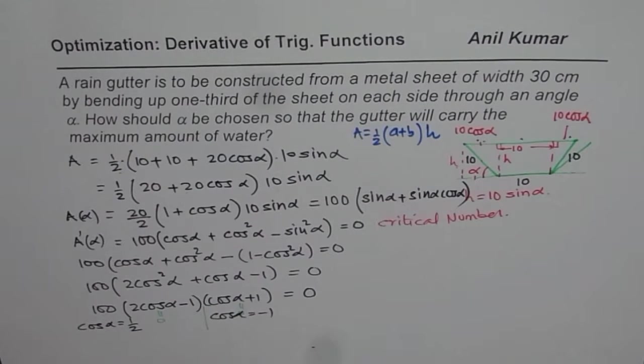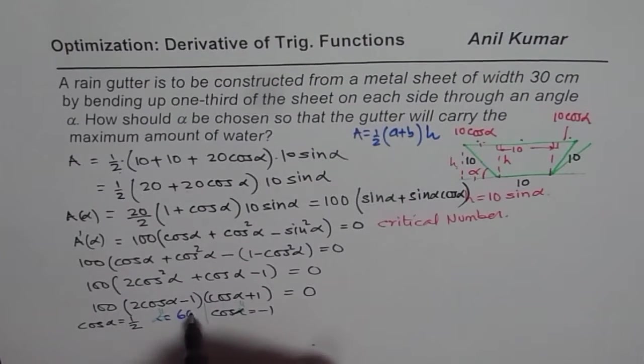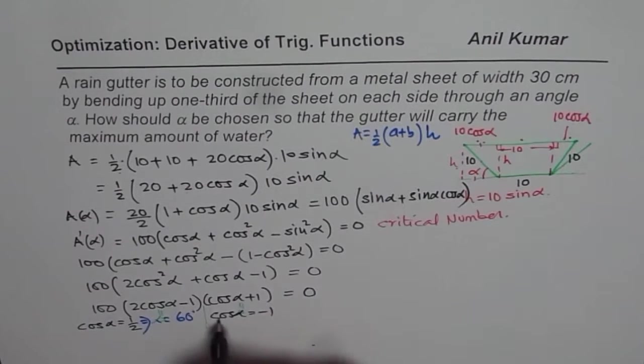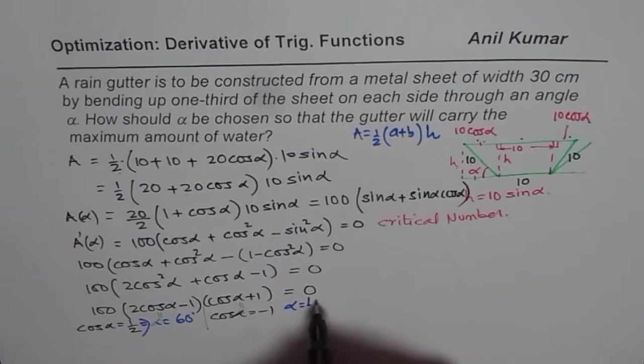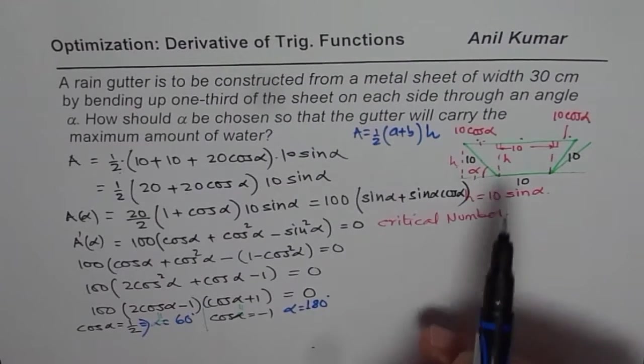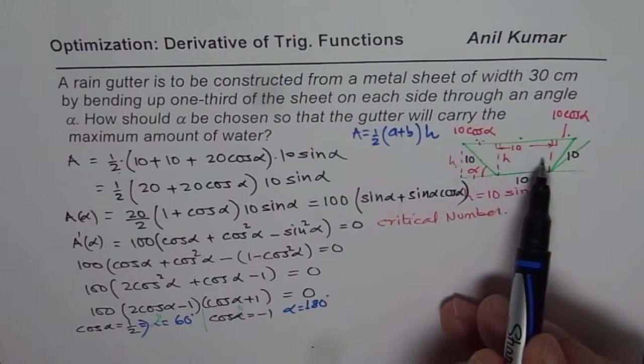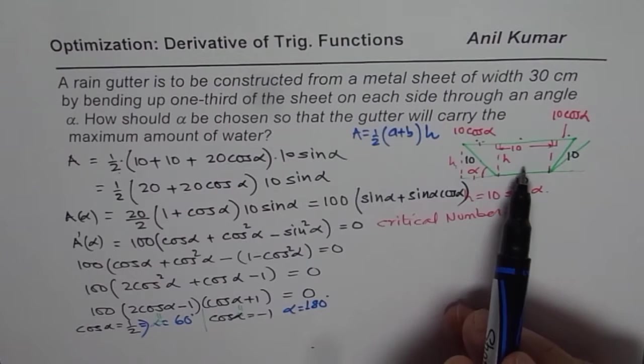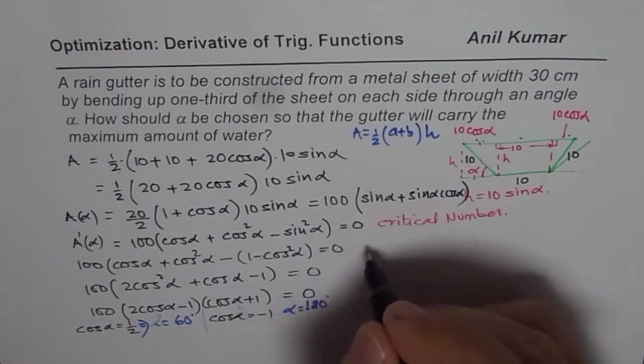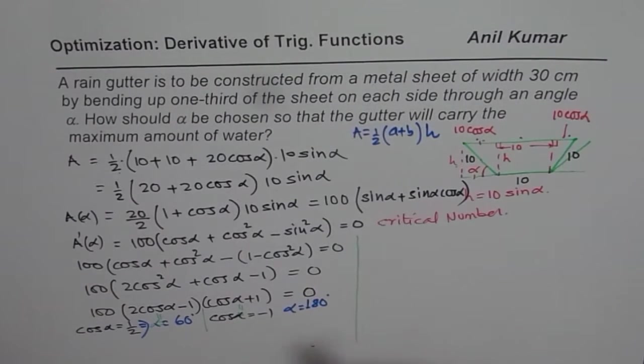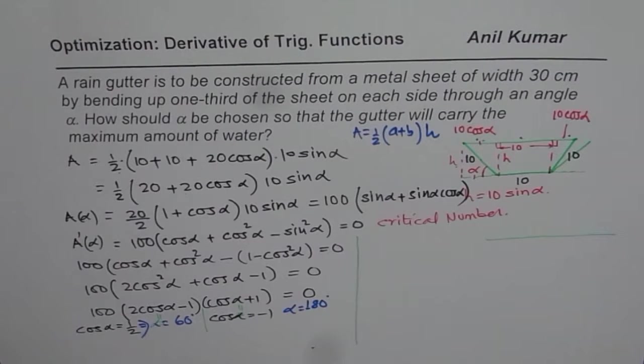Cos alpha is half when alpha equals 60 degrees. Cos alpha equals minus 1 means alpha equals 180 degrees. Now as you can see, if I make alpha 180 degrees, it will be like a flat thing, it cannot hold anything. So that will give you probably the minimum, and for 60 degrees, we may get maximum. Let us verify that this is indeed maximum.